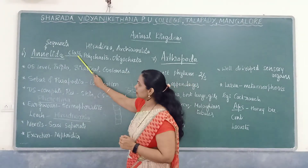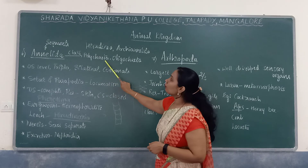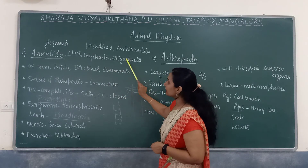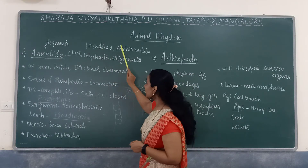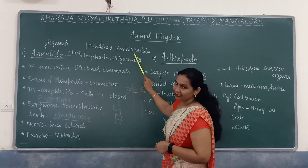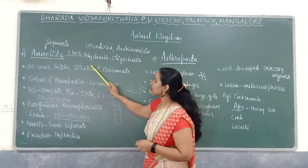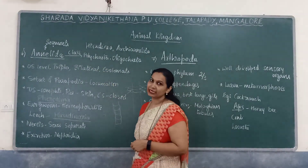There are four classes under Annelida: Polychaeta, Oligochaeta, Hirudinea, and Archi-Annelida.